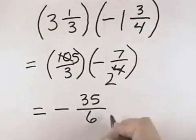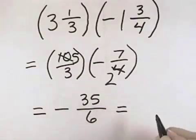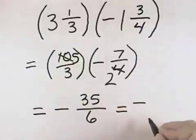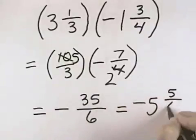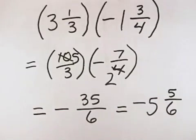Or if we would like to divide it out, we can also say 6 goes into 35, it'll be negative, and we'll go in 5 times with 5 left over, so that we can say the answer is negative 35 over 6, or negative 5 and 5 sixths.